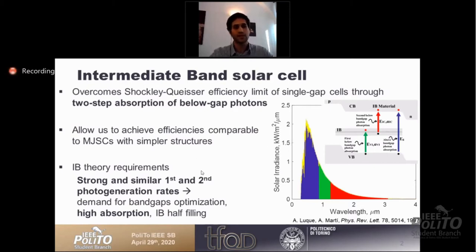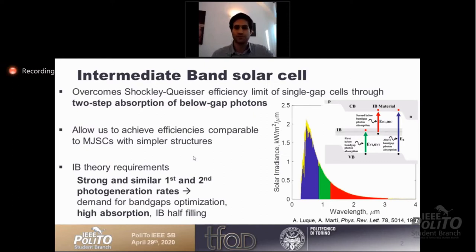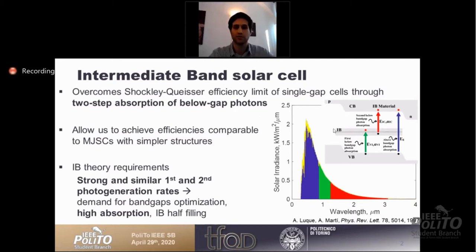The intermediate band theory requires very strong and similar first and second photon generation rates. This requires optimization on the electrical side, but mostly very high optical absorption. We also need half-filling of the intermediate band, meaning the intermediate band layer is half-filled to allow enough electrons to move from the valence band to the intermediate band, and then enough electrons to move out to the conduction band.